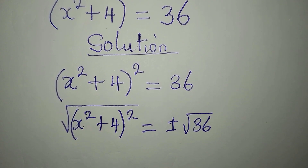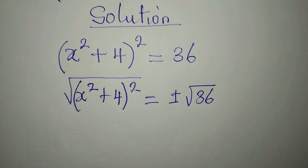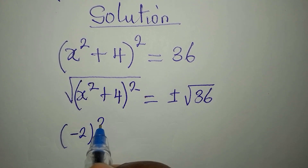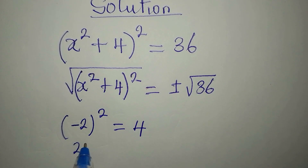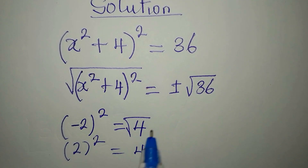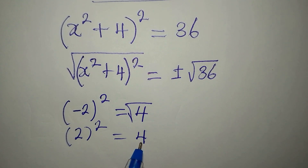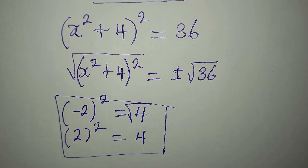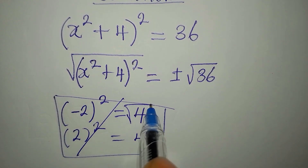Now, so many of my students have asked why we have plus or minus on the other side. It is because: if you have negative 2 to the power of 2, this still gives us positive 4. And if you have 2 to the power of 2, it also gives us 4. That means the square root of 4 can give us either negative 2 or positive 2. So every time you take the square root of both sides, on the other side you will have plus or minus. That was just to explain.